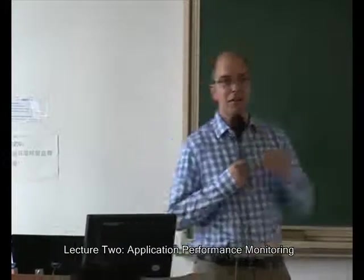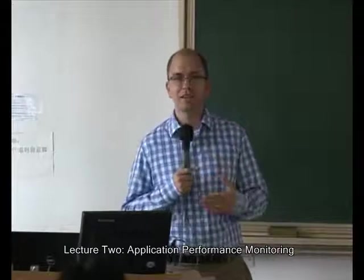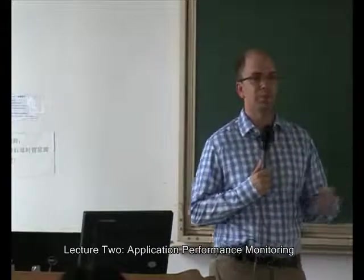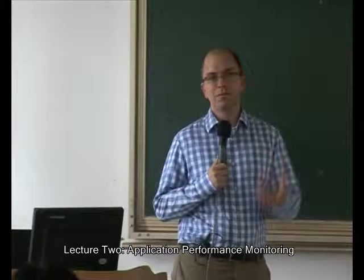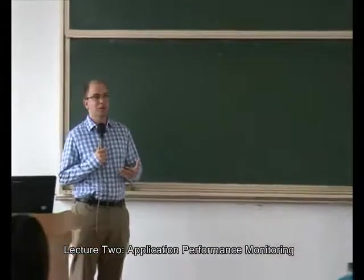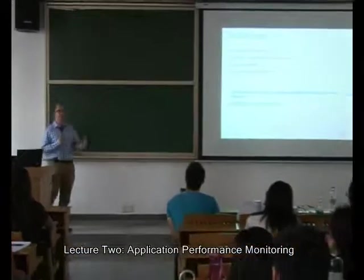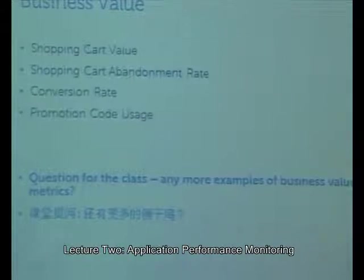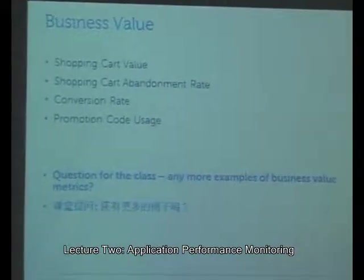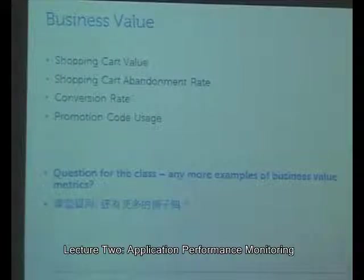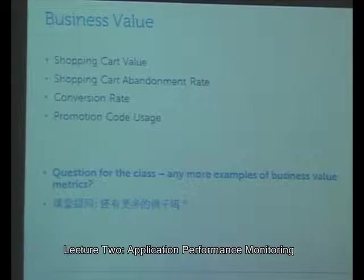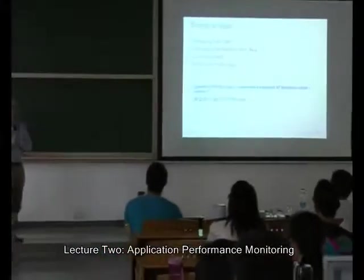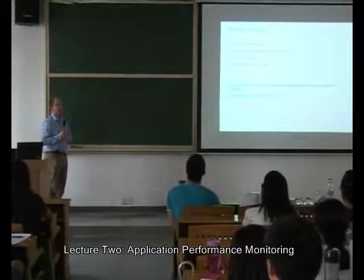Business value metrics are ones that APM people don't always use directly but report to someone else. Examples: what's the average value in a shopping cart, what's the conversion rate — how many people that come to my website actually buy something — how many people use their promotion code. For a school, a business metric might be how many people who took this class went on to work at Dell. It doesn't have to be about IT — it can be any business metric you'd want to graph.